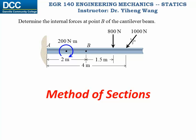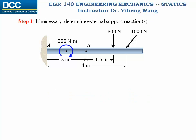Let's look at the proper procedures when applying the method of sections. Step one: determine the external support reactions and complete the free body diagram of the entire member if necessary. Sometimes it is not necessary, but for now let's solve them. Since at point A we have a fixed support, there are three support reactions — two forces and a couple moment — and we can solve for all of them by applying rigid body equilibrium analysis.